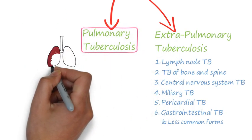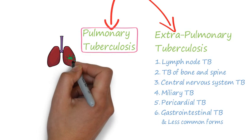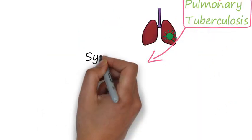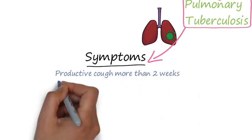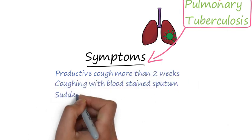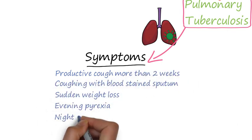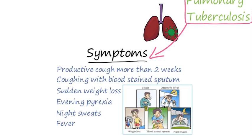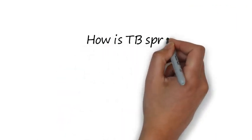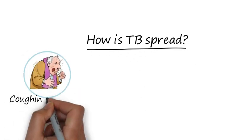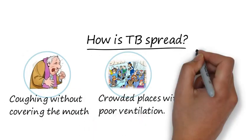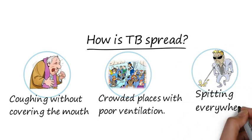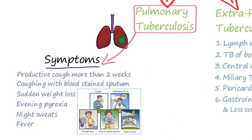Pulmonary tuberculosis is the commonest form of tuberculosis people are affected with. Main symptoms include productive cough for more than two weeks, and in some cases sputum is stained with blood. Sudden weight loss and fever with night sweats are common. TB spreads by coughing without covering the mouth, and when the patient coughs in a crowded place, bacteria enter other people's respiratory systems as they breathe.